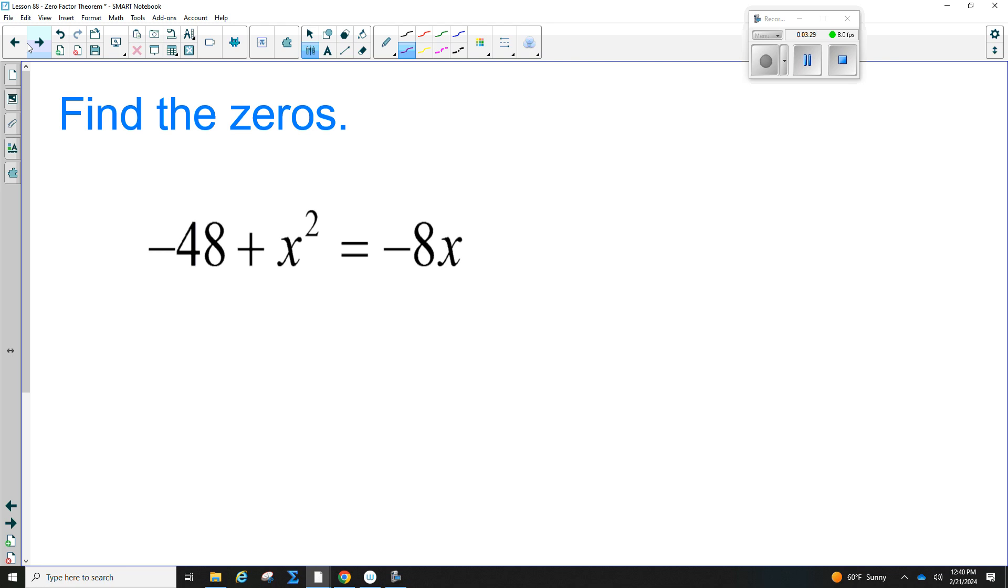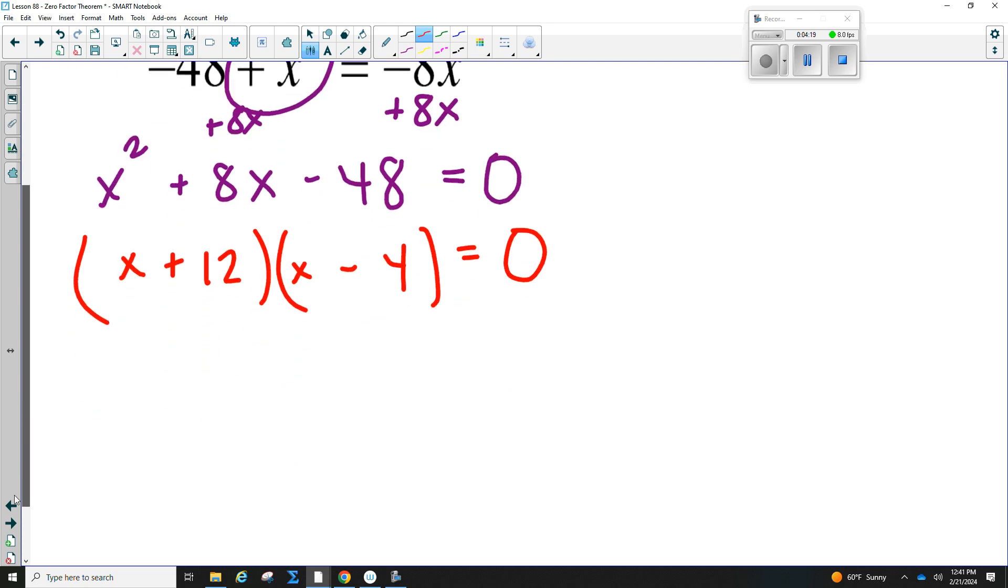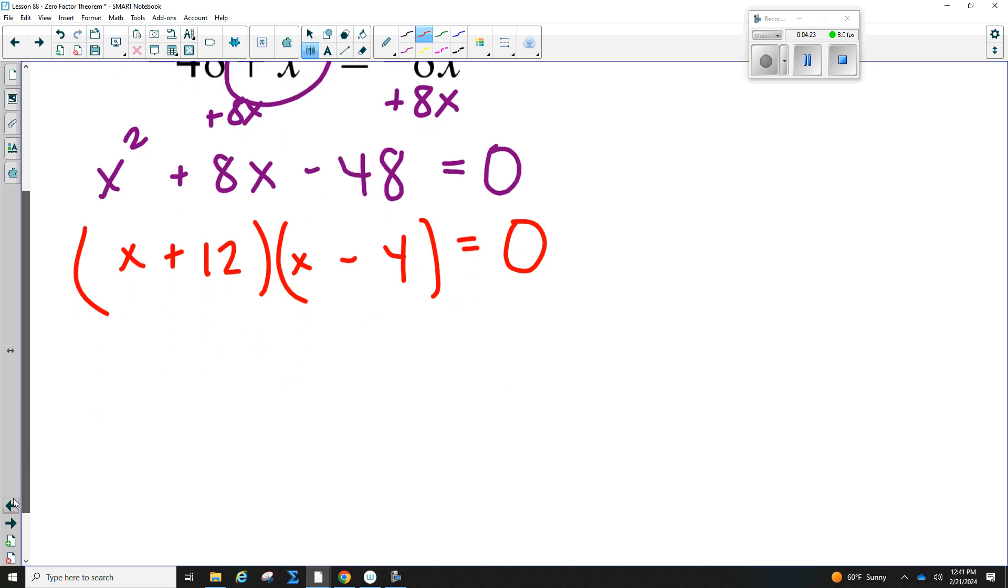Let's try another one. Negative 48 plus x squared minus 8x. We want to set it equal to 0 and put it in order. You want to keep this positive, or if it's negative, you want to move it to the other side. So I'm going to put the x squared first, and then I need the 8x to move over. I'm going to add 8x to both sides, and that is my second term. And then I have minus 48, and that all now equals 0. So I set it equal to 0. And then I factor. x and x. What multiplies to negative 48 and adds to 8? Positive 12 and negative 4. Great job. So then my solutions are what gives me 0. What is this solution right here? What is this solution right here?